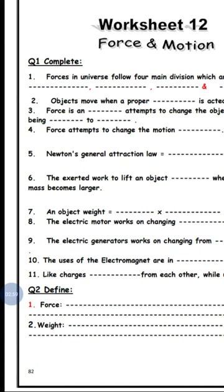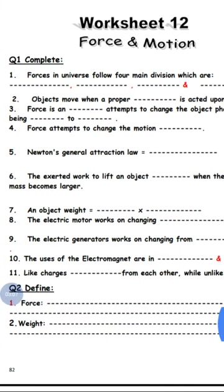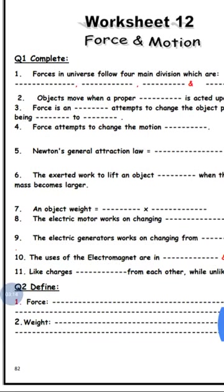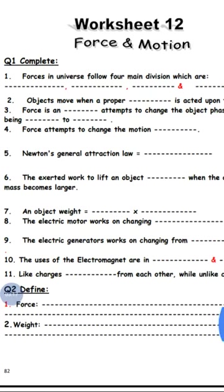Number seven: an object's weight. This is Newton's law — weight equals mass in kilograms times acceleration.